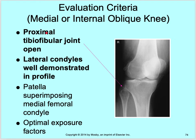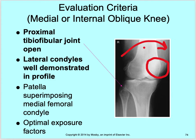Evaluation criteria: the proximal tibial-fibular joint is open — this joint needs to be open with that 45 degree rotation in. You can see that your patella has moved over medially, and that's what should happen. Open that joint space, move that patella medially, and rotate that leg 45 degrees. Lateral condyles are well demonstrated, and the patella is superimposing the medial femoral condyle. Then optimal exposure factors.